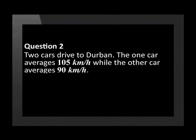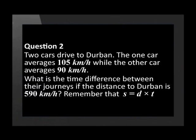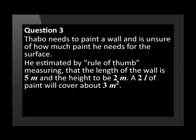Question two is a distance-time problem: Two cars drive to Durban. The first car averages 105 kilometers per hour while the other averages 90 kilometers per hour. What is the time difference between their journeys if the distance to Durban is 590 kilometers? Remember that speed equals distance divided by time.